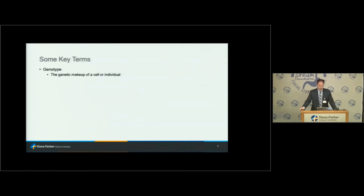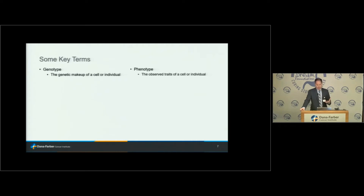In the genetics world, we talk about genotype — the genetic makeup of either a cell or an individual. When we do genetic testing, we are genotyping them, looking to see if the sequence of the genes we're testing is normal. Contrast that with the phenotype — the observed traits of that individual. Somebody may have essentially normal genotype as far as cancer risk genes, but still have a phenotype of cancer. Conversely, somebody may have a genotype that predisposes them to cancer, but hasn't developed cancer — their phenotype is cancer-free.